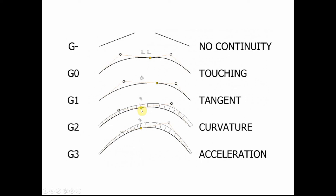And then finally, G3 continuity. They have G0 continuity — they share a point. They have tangent continuity; the curves are tangent at that particular point. They have the same rate of curvature at that point, and G3 also adds the acceleration component at that particular point.